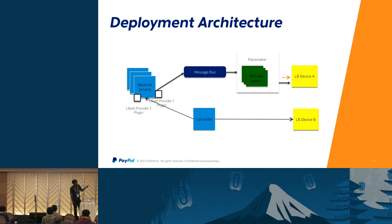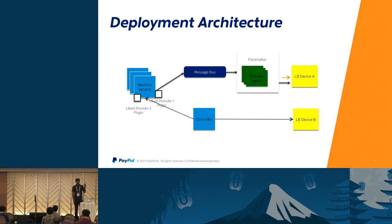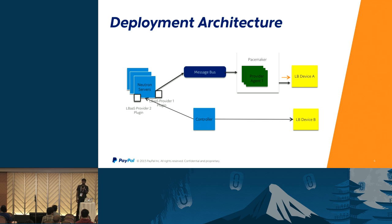To have HA, by design of this particular provider, one LB device is managed by one agent. So if the agent goes down, the work won't happen. What we do is run the agent in HA mode using Pacemaker. If one agent goes down, Pacemaker identifies it, another agent comes up, reads the message bus, and then the work is done properly.